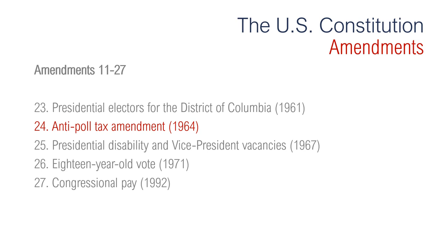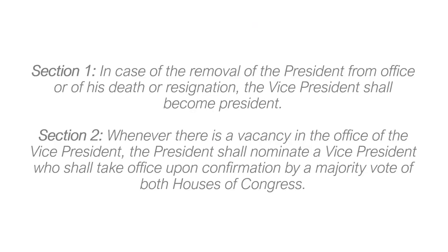The 24th Amendment is the anti-poll tax amendment, passed in 1964. It says that no government shall require a person to pay a poll tax to vote in any federal election. The 25th Amendment is regarding presidential disability and vice president vacancies, passed in 1967. Section 1 states that in case of the removal of the president from office, or of his death or resignation, the vice president shall become president. Section 2 says whenever there is a vacancy in the office of the vice president, the president shall nominate a vice president who shall take office upon confirmation by a majority vote of both houses.